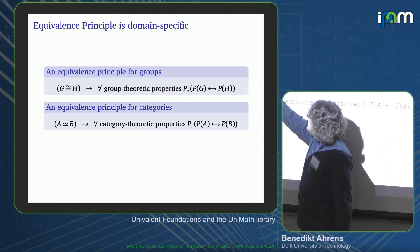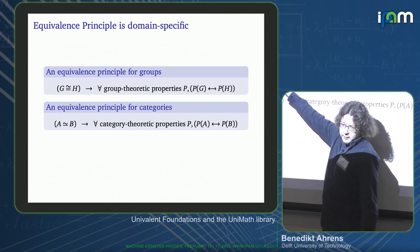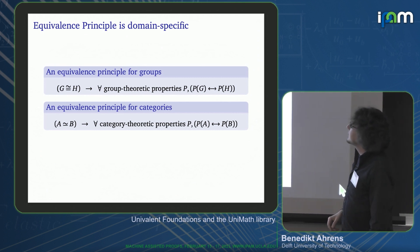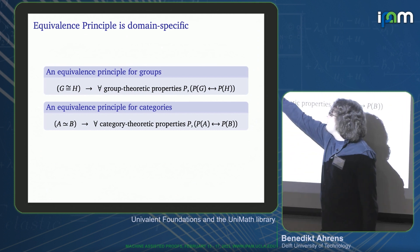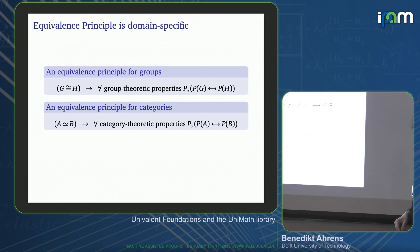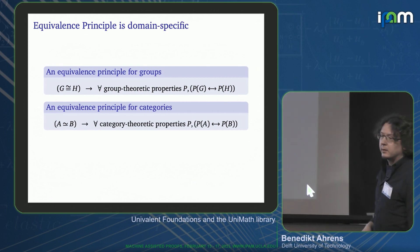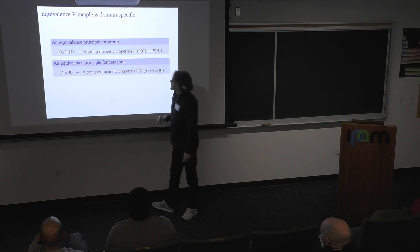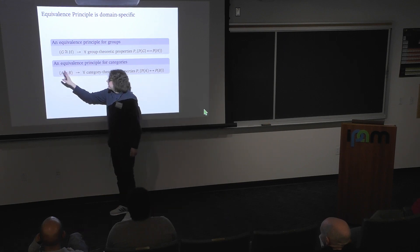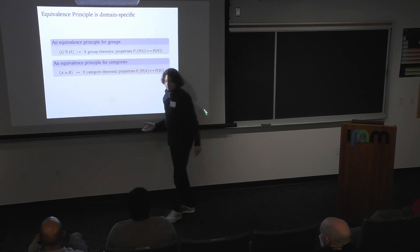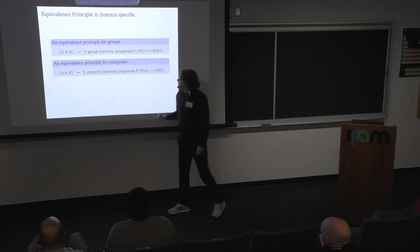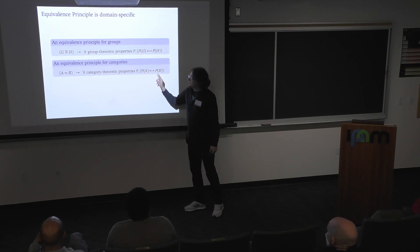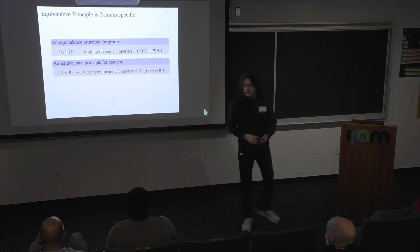Two things are important here. Firstly, this notion of sameness depends on the mathematical objects G and H, on what kind of things they are. Then usually I have to restrict myself to certain kinds of properties that are the interesting ones that are invariant. If I look at an equivalence principle for categories, I have a different notion of sameness between objects — namely equivalence of categories — and I'm interested in different properties, namely category-theoretic ones, that I expect to be invariant under equivalence.